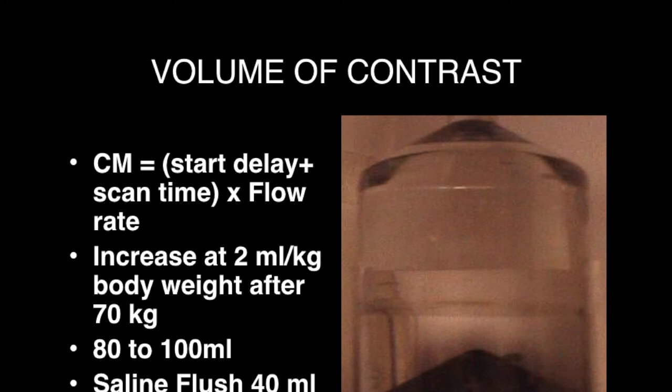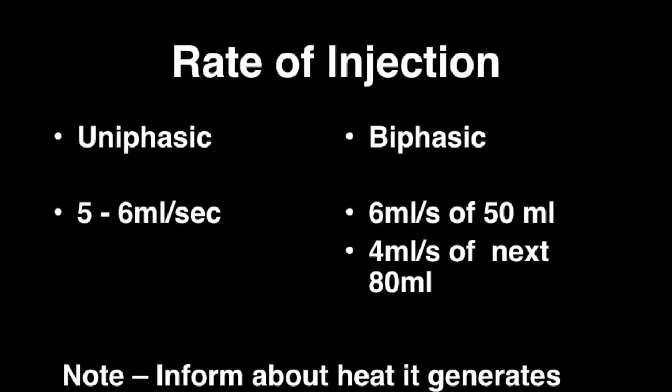Following the base volume, for every kilogram increase in body weight, 2 ml of contrast can be added. Practically, for a patient between 70 and 90 kg we use 100 ml of contrast, and for a patient above 90 kg we use 110 to 120 ml. This is followed by a saline flush of 40 ml. The rate of injection is normally 5 to 6 ml per second; we follow a uniphasic injection at 5 to 6 ml per second, with the same rate used for the saline flush.